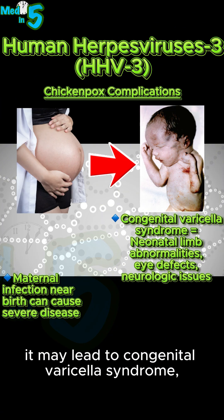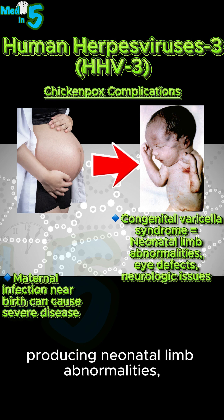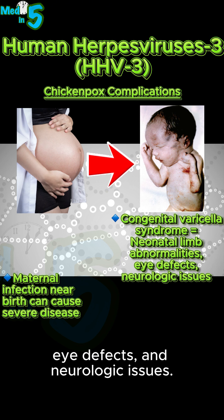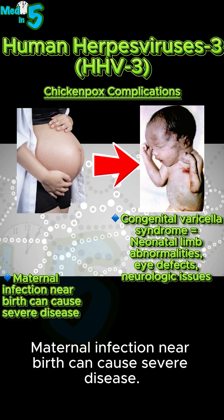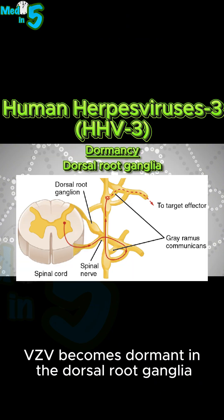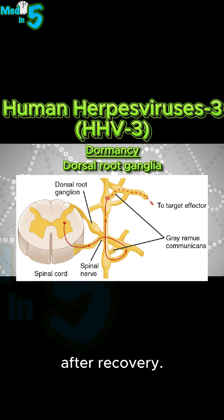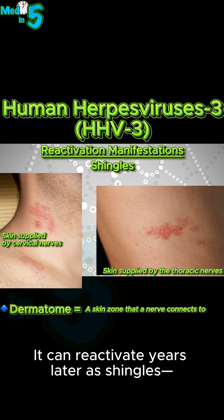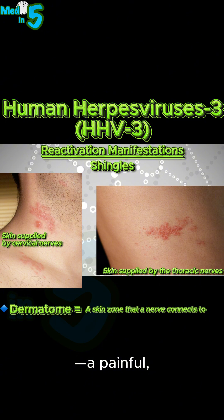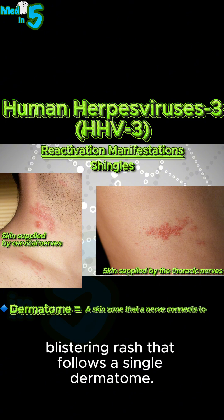In pregnant women, it may lead to congenital varicella syndrome, producing neonatal limb abnormalities, eye defects, and neurologic issues. Maternal infection near birth can cause severe disease. VZV becomes dormant in the dorsal root ganglia after recovery. It can reactivate years later as shingles, a painful blistering rash that follows a single dermatome.